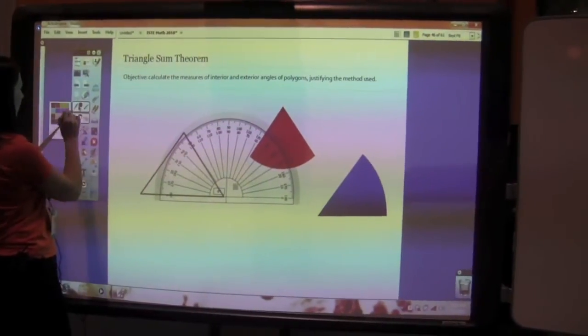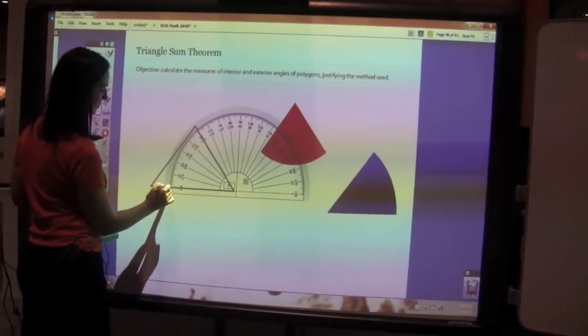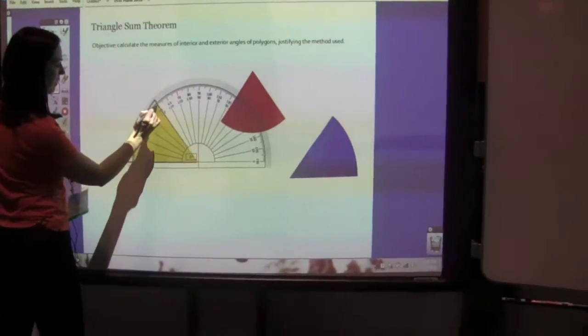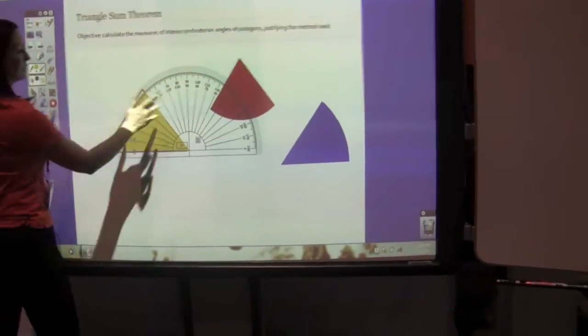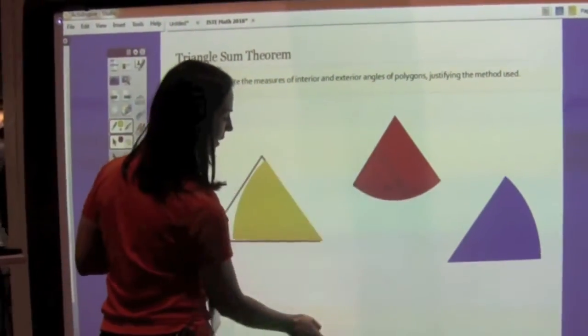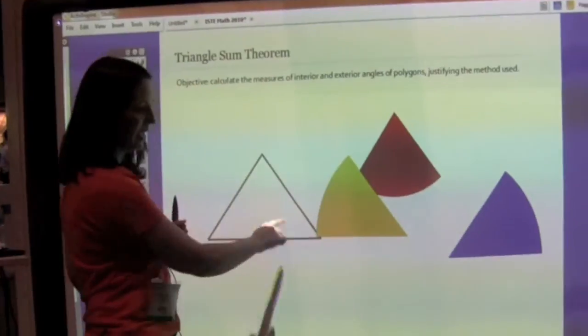And again we're going to change our color to yellow here. And measure our third angle. And we'll go ahead and close that. So now I have the three angles here.